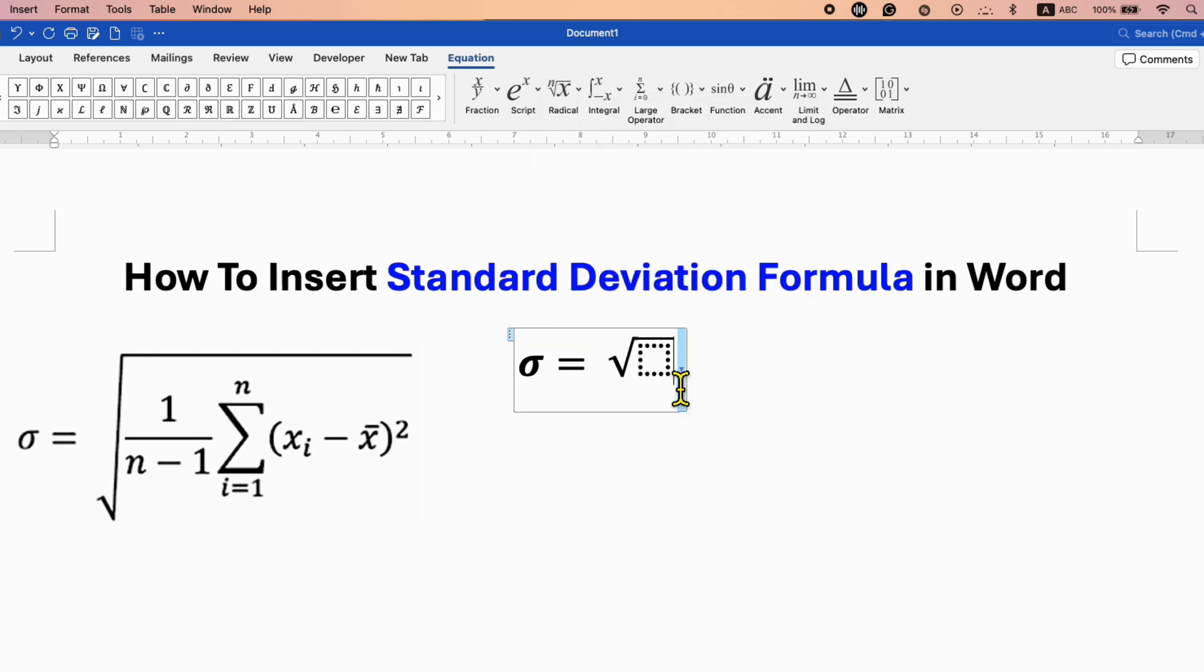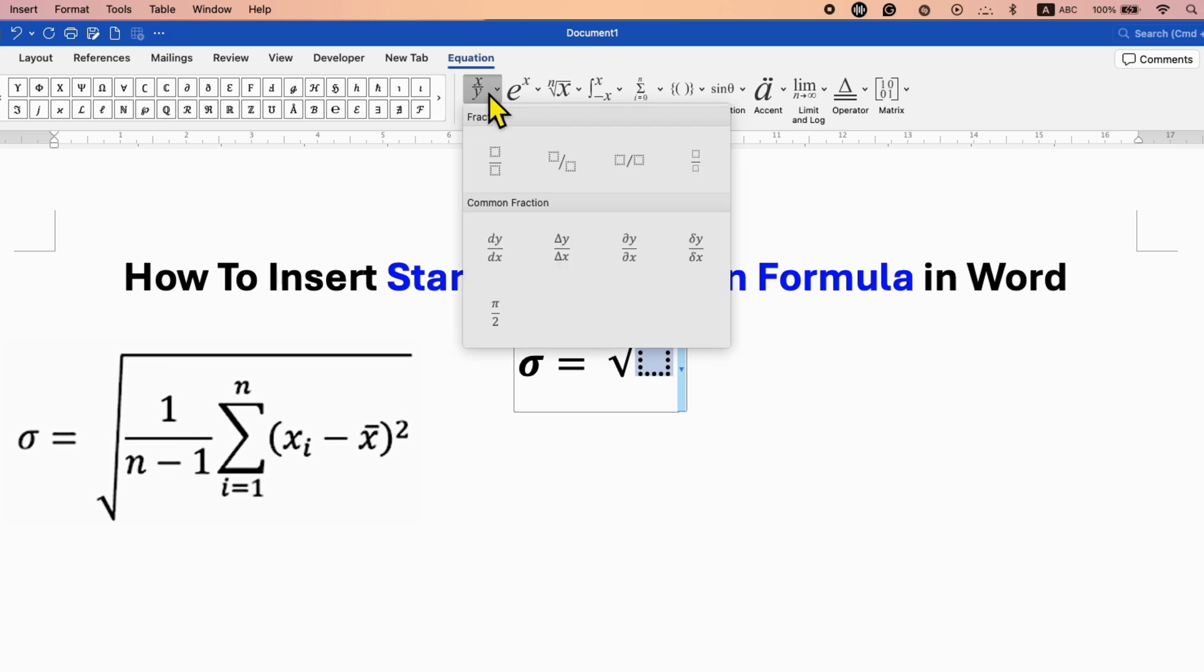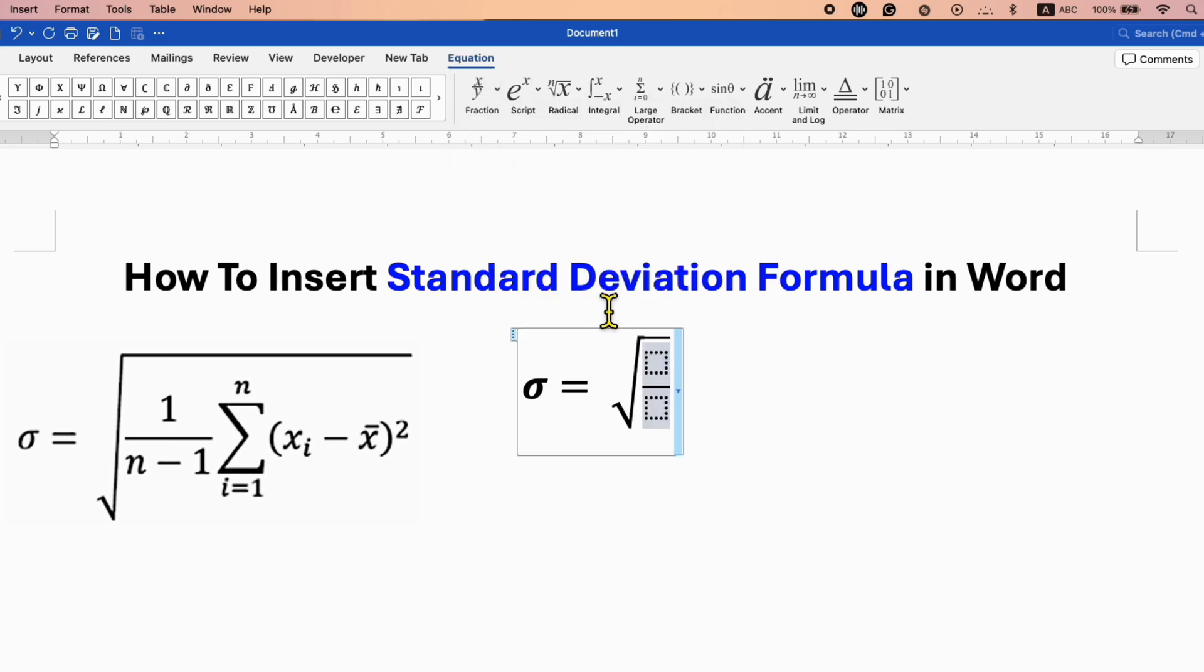Now inside the square root we need the numerator and denominator. For that, click inside the box. Under the Equation tab, go to Fraction and select the first option, stacked fraction. Now you can type the numerator 1 and n-1.